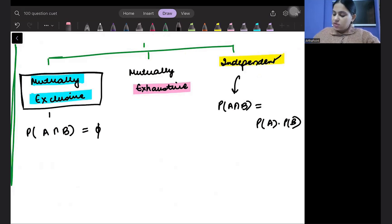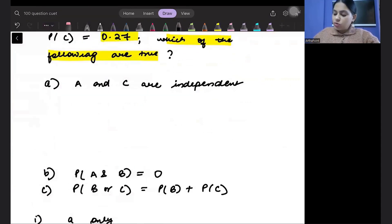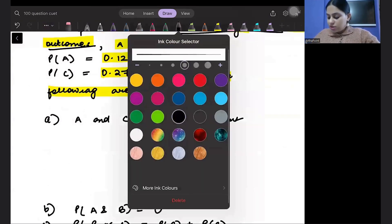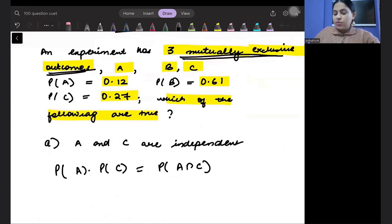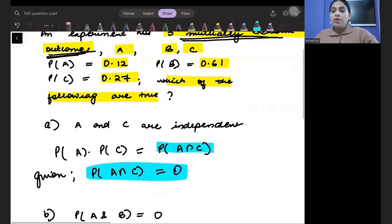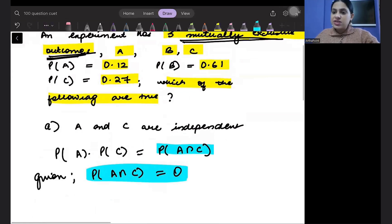I am given exclusive and independent. It says that they are exclusive, meaning there is nothing common. Are they independent also? Is A and C independent? For A and C to be independent, probability of A into probability of C should equal probability of A intersection C. But A and C are mutually exclusive, so probability of A intersection C is zero. There is nothing common between A and C.